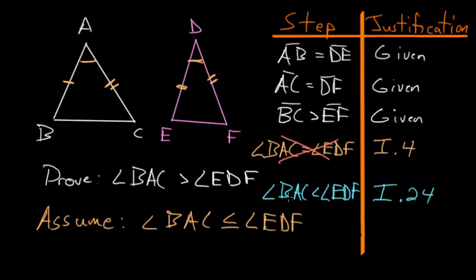We know that if this angle is less than this angle, then this side BC would be less than this side EF, but we know the opposite is true, since BC is bigger than EF. So therefore, we can conclude that this can't be true as well.